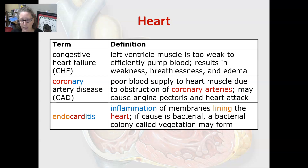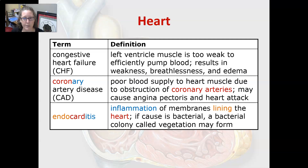If the cause of endocarditis is bacterial, a bacterial colony called a vegetation may form on the inner linings of the heart, and these need to be treated aggressively with antibiotics.